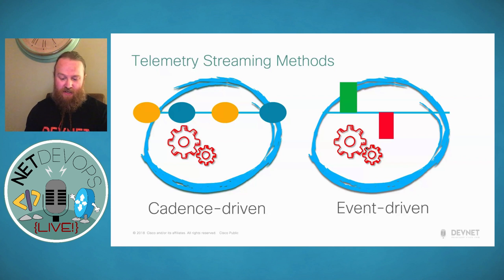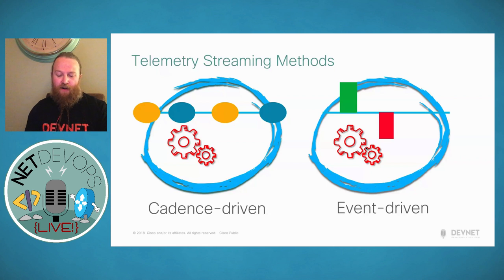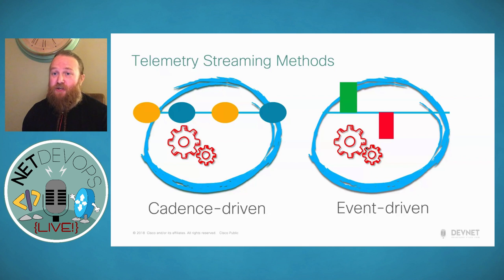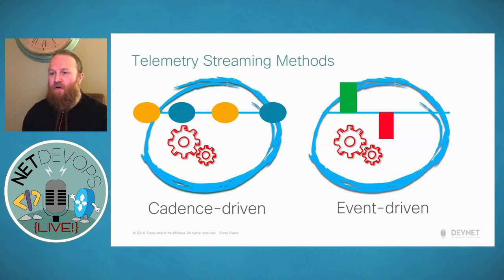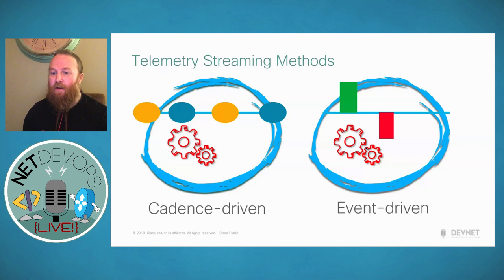The configuration for event-based telemetry is similar to cadence-based telemetry, with the sample interval value as the differentiator. You configure the sample interval value to zero, which sets the subscription for event-based telemetry. Configuring the interval to any non-zero value sets a subscription for cadence-based telemetry, where you change that value to get the data at the rate that suits your needs.